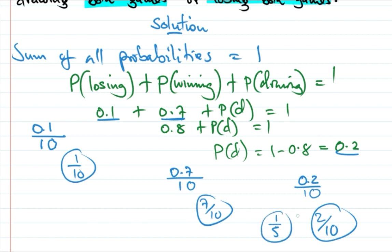So 0.2 gives us 2 over 10, which simplifies to 1 over 5. Now let's go back to our question.